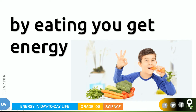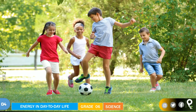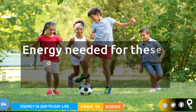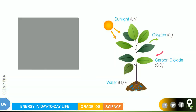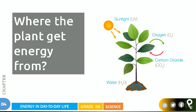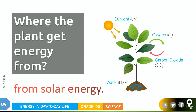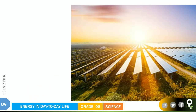So by eating, you get energy. The energy needed for these activities is supplied from the food you eat, without any doubt. Now, where did the plant get its energy from? Everybody knows that — we already talked about it. Sunlight is the main source that comes as energy. So it is getting from solar energy. Solar energy, or sunlight, is a very important energy source.